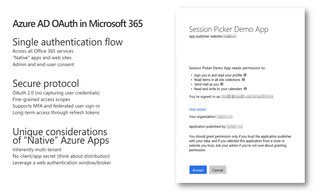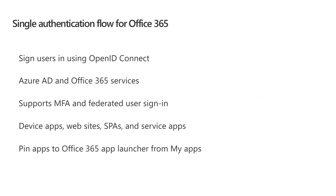Native applications differ from web applications in a few ways. They're multi-tenant by default and you don't need to worry about sending app credentials or app secrets when the native app is distributed, because once you distribute the app it's never really going to be a secret. So instead we're going to use some special redirection URLs. All Office 365 cloud services including SharePoint Online and the Microsoft Graph leverage Azure AD for a single authentication flow.